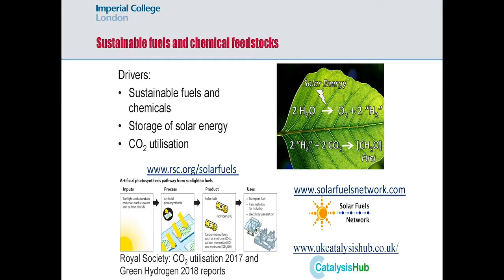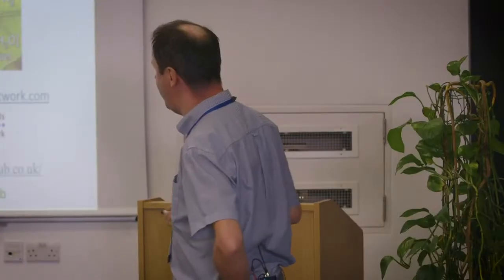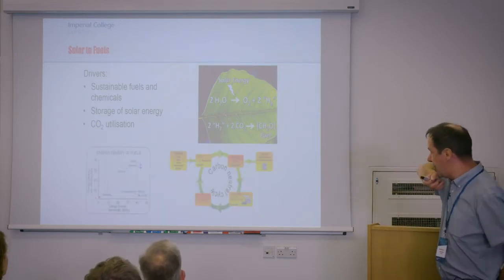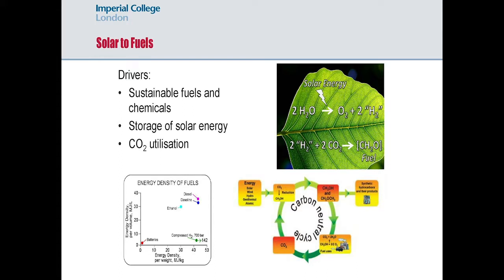The vision, the drivers, are the challenge of: can we have sustainable fuels and chemicals? Can we imagine pathways to getting both fuel and, maybe even shorter term, high-value chemicals where the energy input is sustainable? This vision of sustainable fuels and chemicals is something the Royal Society of Chemistry has reported on, and more recently the Royal Society has had two reports on both CO2 utilization and green hydrogen, which are very much part of that story. The challenge is that batteries are fantastic for short-term storage, but their scalability makes them more challenging for long-term inter-seasonal storage. Therefore, if you want long-term storage, storing energy in chemical bonds is going to be a key issue.